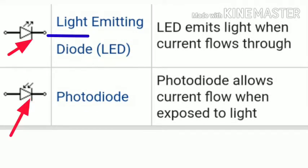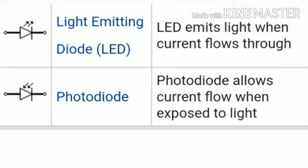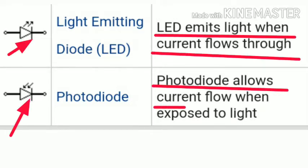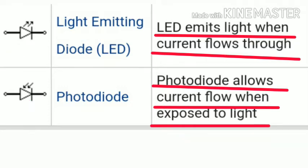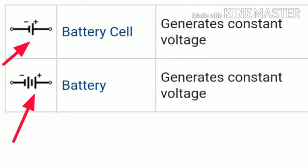The next symbols are the LED and the photodiode. LED means Light Emitting Diode — it emits light. In the symbol, the arrows point outward. The LED emits light when current flows through the circuit. The photodiode is also a very common electrical component that works when current flows through the diode.